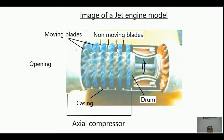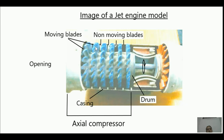Between two sets of moving blades there is a blank space where non-moving blades are installed. You can see these white-colored entities — they are non-moving blades attached to the casing, so they don't move. Their job is to raise the pressure: when fluid leaves the moving blades with high kinetic energy, it passes through these non-moving blades where pressure is raised. They also provide the proper direction to the air before it arrives at the next set of moving blades. One moving blade system plus one non-moving blade system equals one stage.